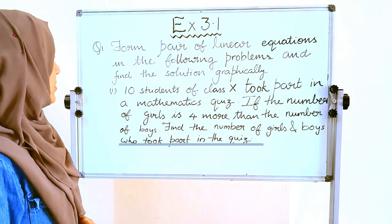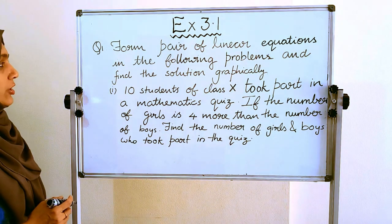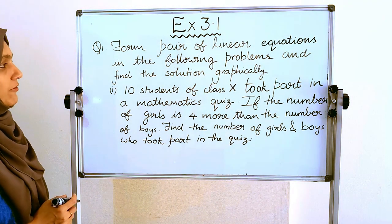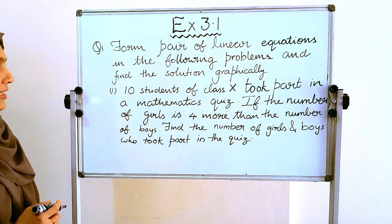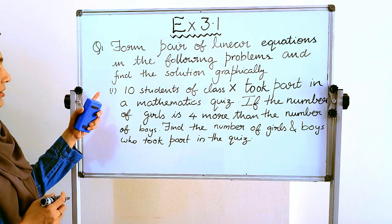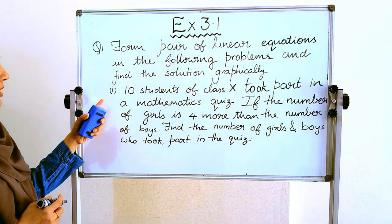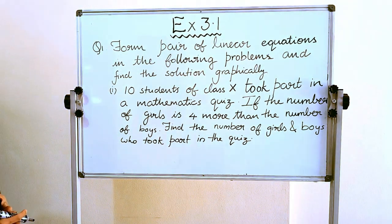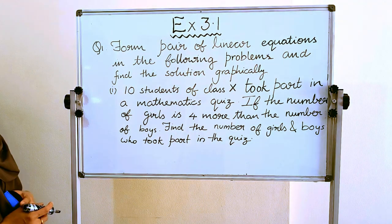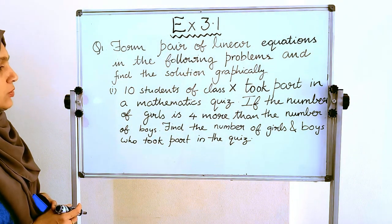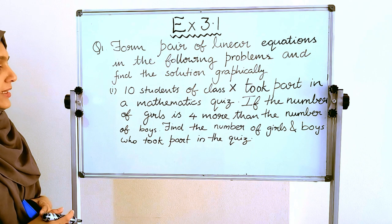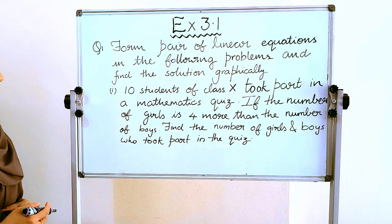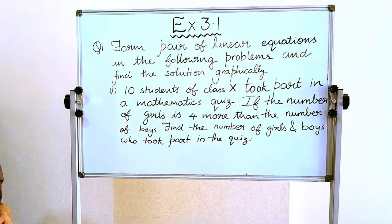Our first question is: form a pair of linear equations in the following problems and find the solution graphically. Problem number 1: 10 students of Class 10 took part in a mathematics quiz. If the number of girls is 4 more than the number of boys, find the number of girls and boys who took part in the quiz.